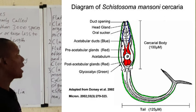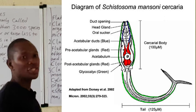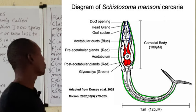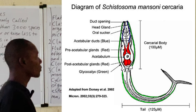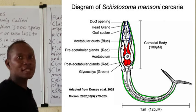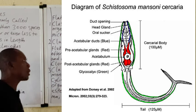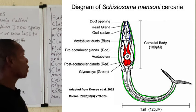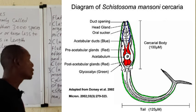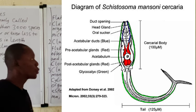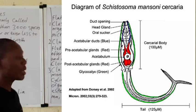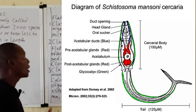We also have the class Trematoda, which are generally regarded as the flukes or the digenetic fluke. There are many parasites of vertebrates. These organisms, as you can see from the diagram displayed on the board, are leaf-like in shape, or some are cylindrical, with ventral and oral suckers, which you can see in the diagram being shown.